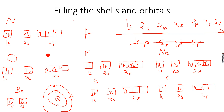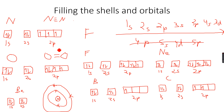Oxygen has two half-empty orbitals, and that's why O₂ has a double bond — oxygen gas has a double bond because it can take one electron each in both orbitals. Nitrogen forms triple bonds because there are three half-empty orbitals; they can each take one electron, so nitrogen forms triple bonds.